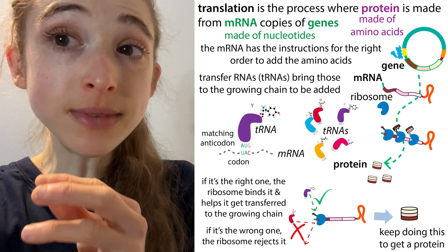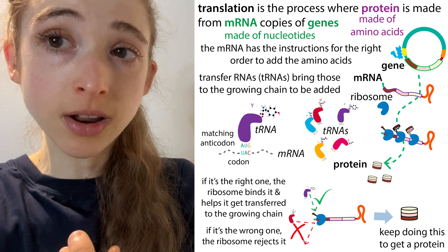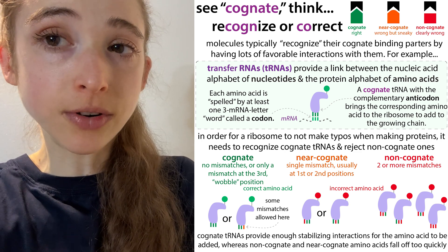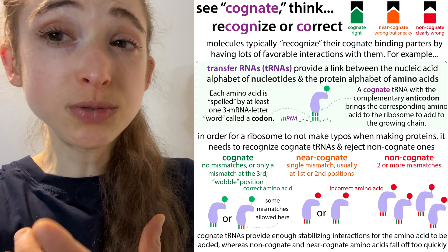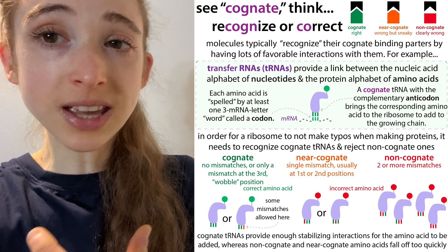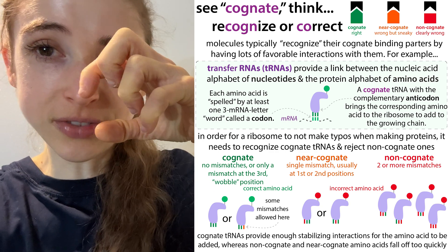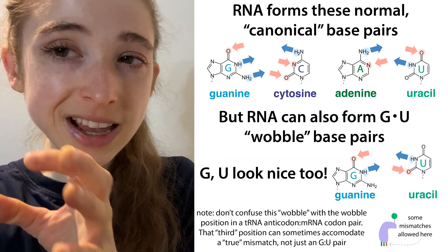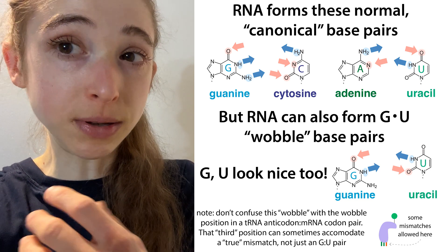If you have mismatches between the tRNA anticodon and the messenger RNA codon, those get rejected. However, if these mismatches are in the third position, this can actually still be incorporated because this is what we call a wobble position, where there's a little more flexibility allowed. You can get things like non-canonical base pairing — the bases shifting a little so they can make weaker interactions that aren't the normal G-to-C or A-to-U interactions, but can still hold things in place and not be rejected.